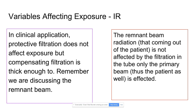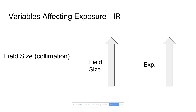The filter in the tube that adds up to 2.5 millimeters of aluminum equivalent should not affect the radiation felt by the image receptor. When it comes to field size — collimation — when the field size increases, meaning you're not collimating, you're including all that scatter and irradiating more, not cutting off any of the beam. So exposure to the image receptor is going to increase.